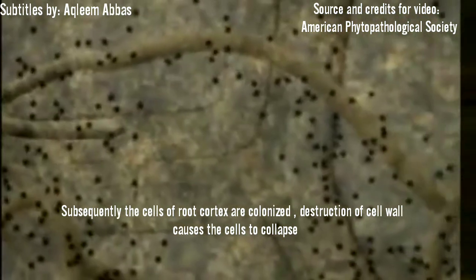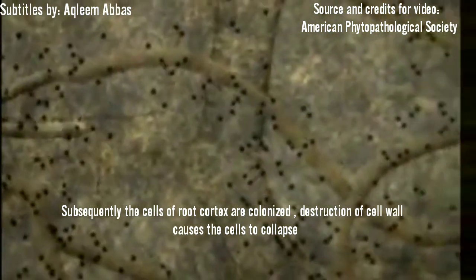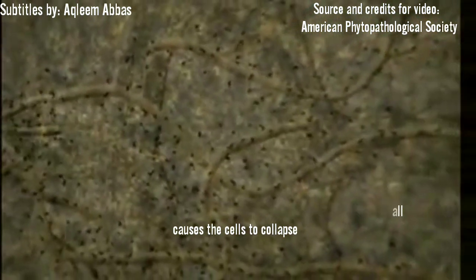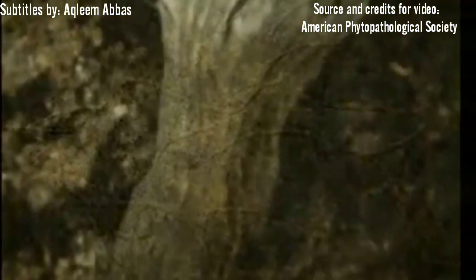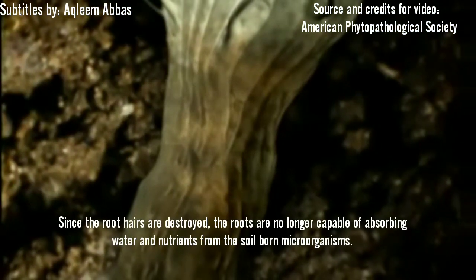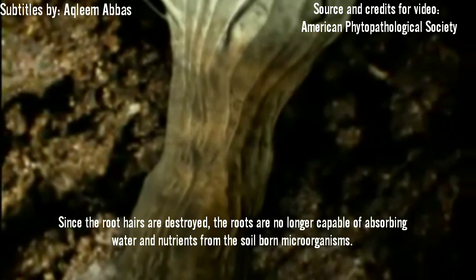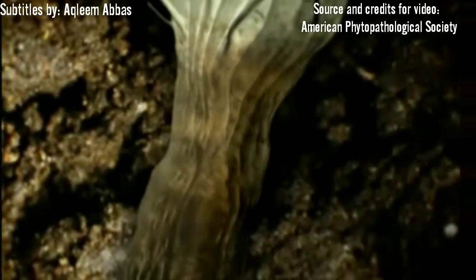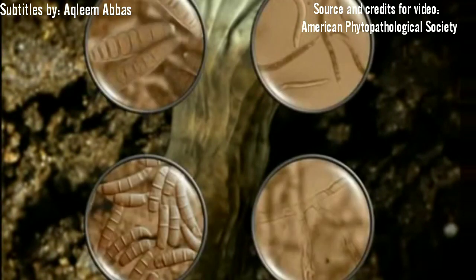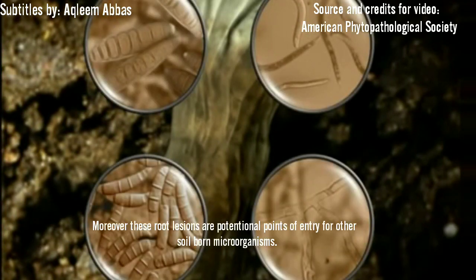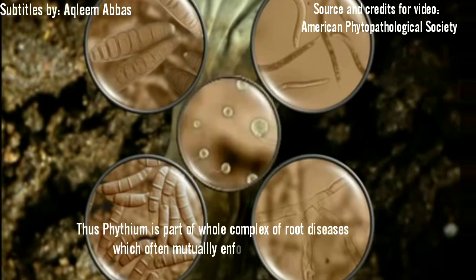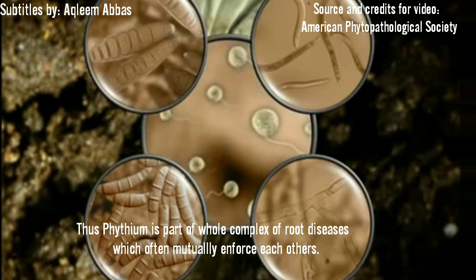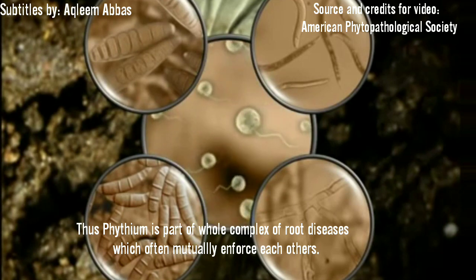Destruction of the cell walls causes the cells to collapse. Since the root hairs are destroyed as well, the root is no longer capable of absorbing water and nutrients from the soil. Moreover, these root lesions are potential points of entry for other soil-borne microorganisms. Thus, Pythium is part of a whole complex of root diseases, which often mutually enforce each other.